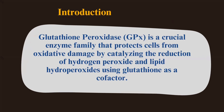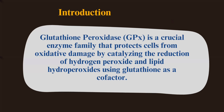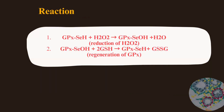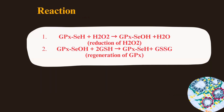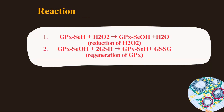Glutathione peroxidase is a crucial enzyme family that protects the cell from oxidative damage by catalyzing the reduction of hydrogen peroxide and lipid hydroperoxide into water and alcohol respectively, thereby neutralizing reactive oxygen species. In this reaction, glutathione acts as a co-factor.